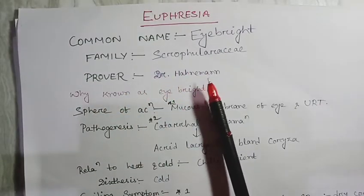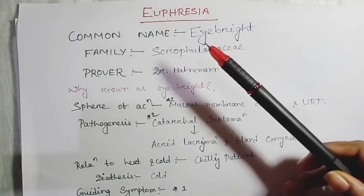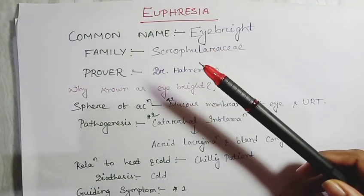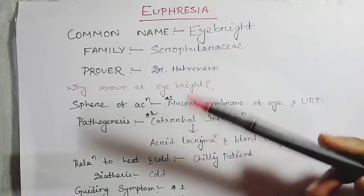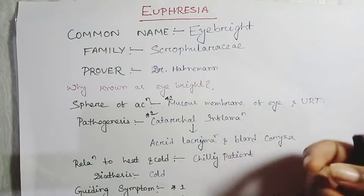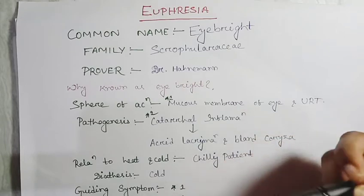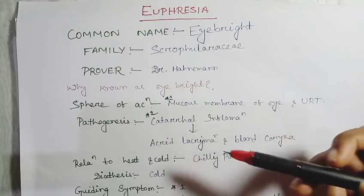Why is it known as Eyebright? In Euphrasia, the signature is a black spot in the corolla, which looks like a pupil. So this pupil marked as an eye medicine in ancient times is why Euphrasia is known as Eyebright.